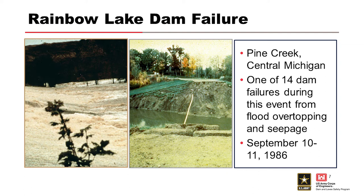The reason the vegetation was sparse is because there was a road that angled down the downstream side of the embankment — a trail they had created. This was one of 14 dam failures from that event.